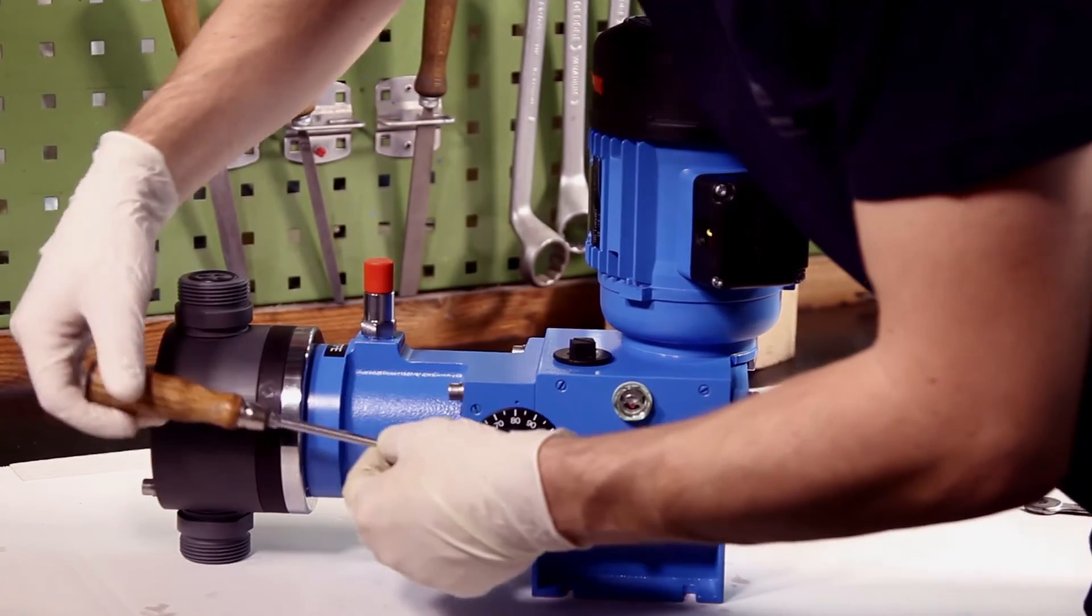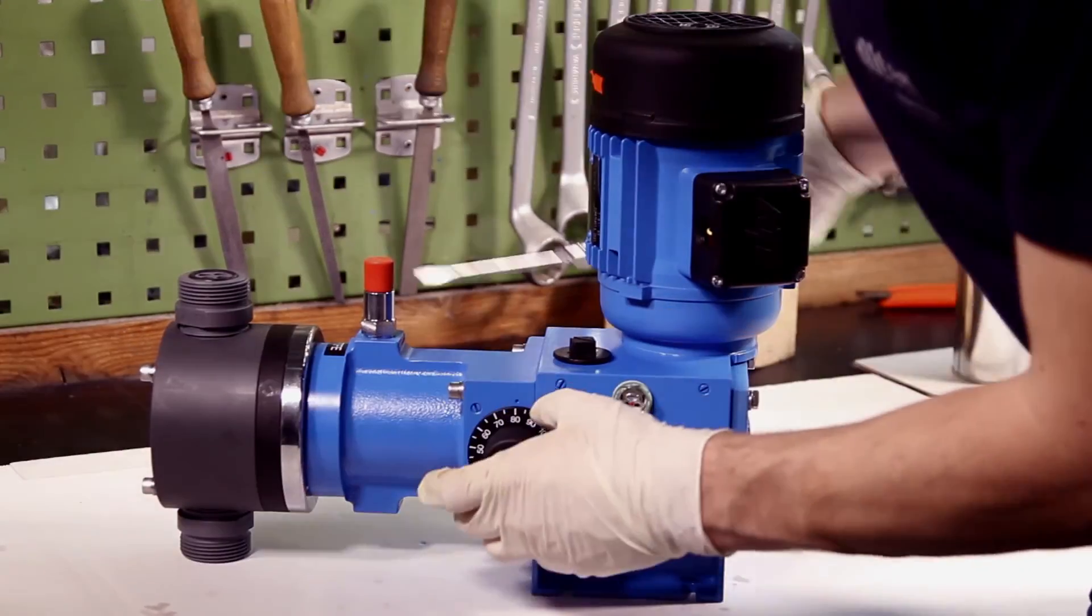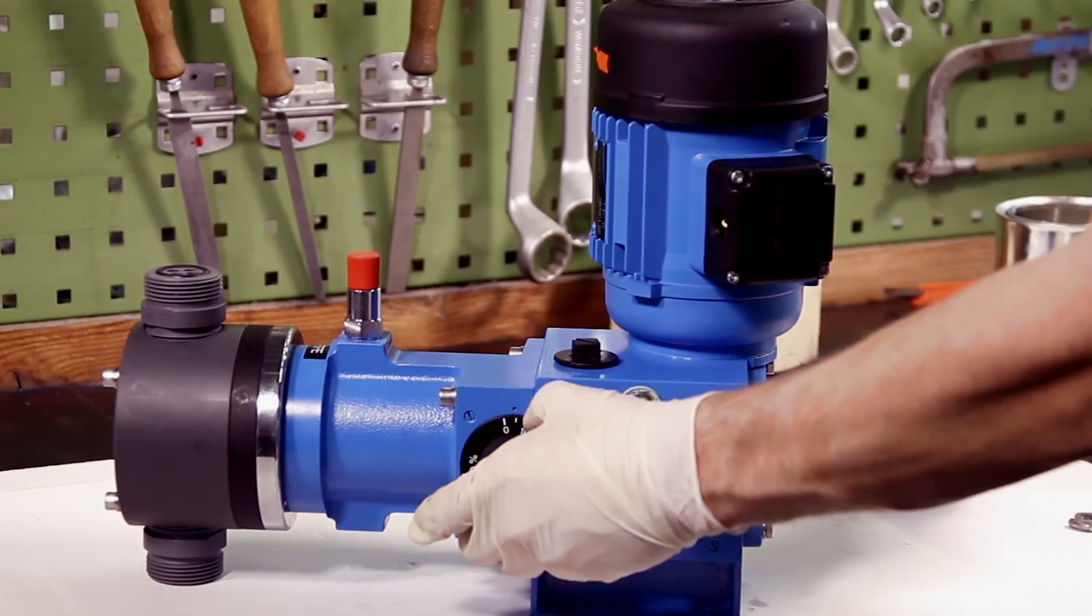The zero point can be adjusted by loosening the threaded rod and rotating the adjusting spindle clockwise until the process of dosing observed in the measuring pipe stops.